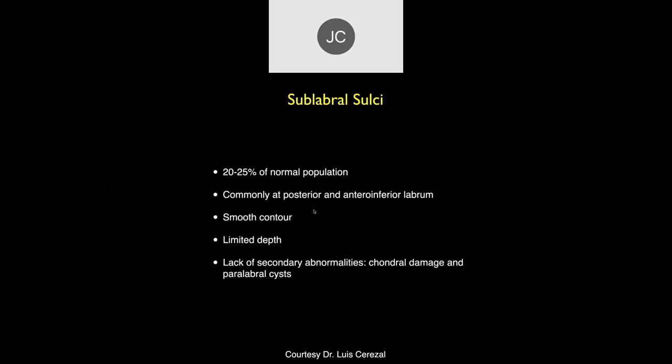If it's nice and smooth, I'll describe it as a congenital chondrolabral defect or sublabral sulcus. But I usually say in the report that this is thought to be a normal chondrolabral congenital defect, though a tear cannot be entirely excluded.